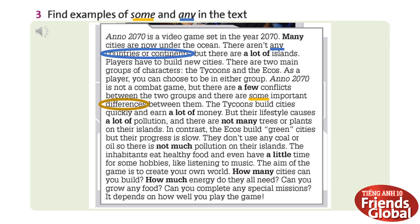The Tycoons build cities quickly and earn a lot of money, but their lifestyle causes a lot of pollution and there are not many trees or plants on their islands. In contrast, the Echoes build green cities, but their progress is slow. They don't use any coal or oil, so there is not much pollution on their islands.